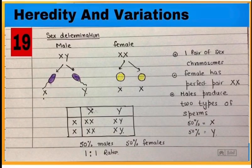This is sex determination in humans, where males are with XY chromosomes while females are with XX chromosomes, and male is the deciding factor for sex in the next generation.